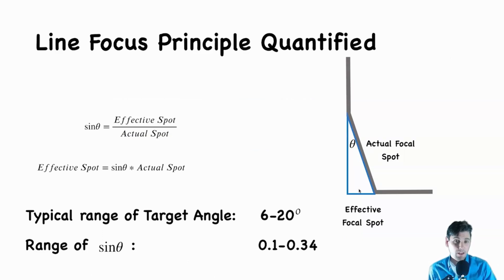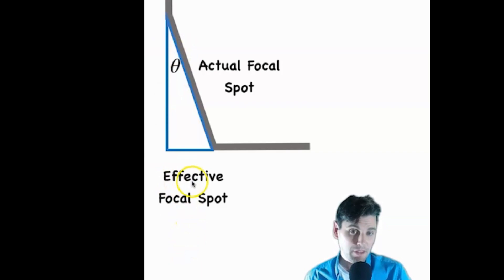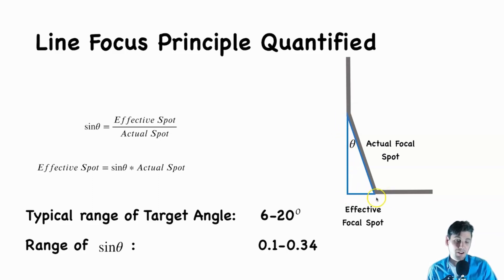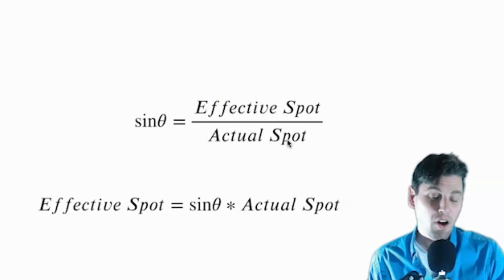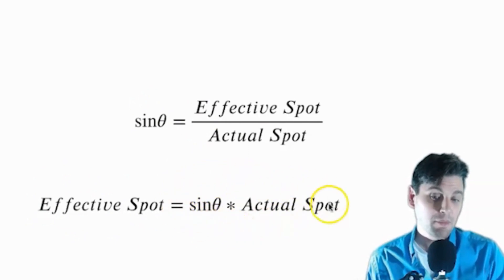If we quantify that, the x-ray tube has a target angle as shown here. Right here is the actual focal spot where the electrons are hitting, and right here is the effective focal spot where the x-rays are coming out. If we remember from high school math, for these right triangles, the definition of the sine at this angle is the opposite over the hypotenuse. So the sine of this angle is the effective focal spot divided by the actual focal spot. Solving for the effective focal spot, we get: effective focal spot equals sine of theta times the actual focal spot.